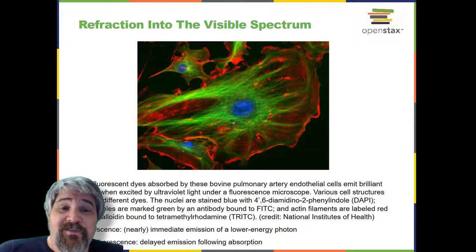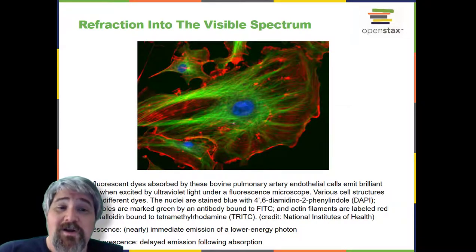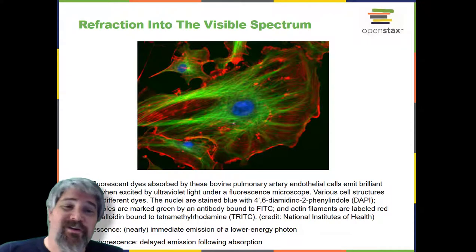In some materials, the photons may be emitted following a delay after absorption. In this case, the process is called phosphorescence. Glow-in-the-dark plastics work by using phosphorescent material.